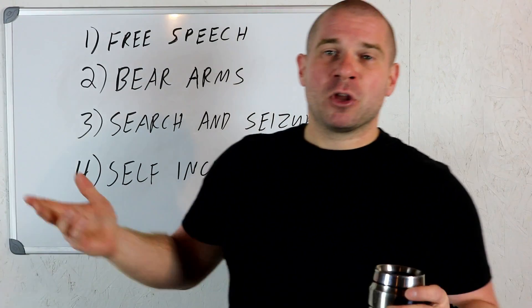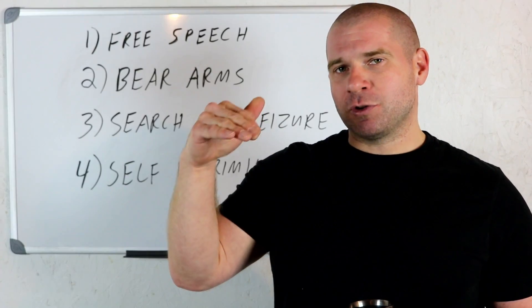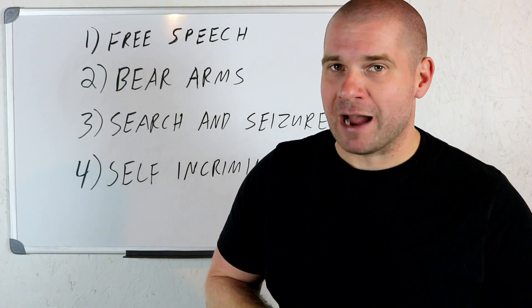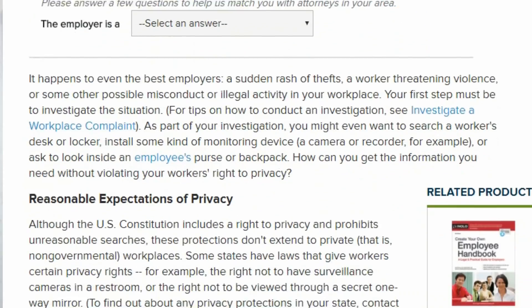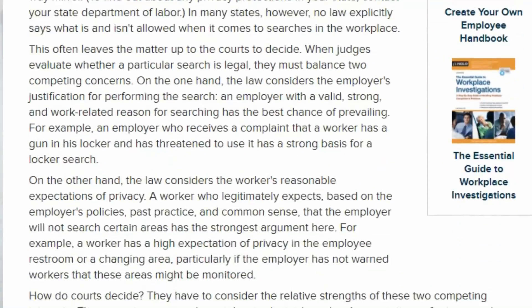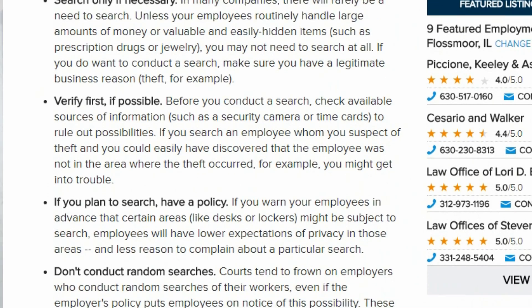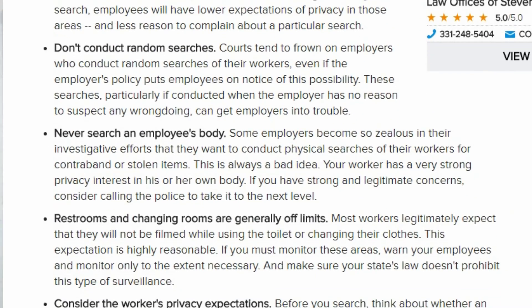Moving right along there, search and seizure. So you work for Hot Topic or Walmart or whatever, right? There was a certain instance, a certain set of circumstances where you start having privacy rights, right? If you bring your backpack to work, work might say, well we have the right to search that backpack. You'd be like, no you don't. No, I have an expectation of privacy in this backpack. You can say, well I have an expectation of privacy in my pocket. Your work can't just search you just to search you.